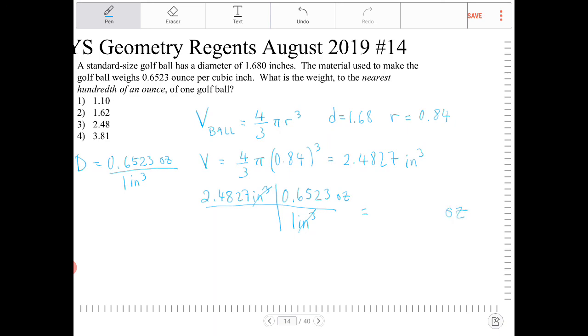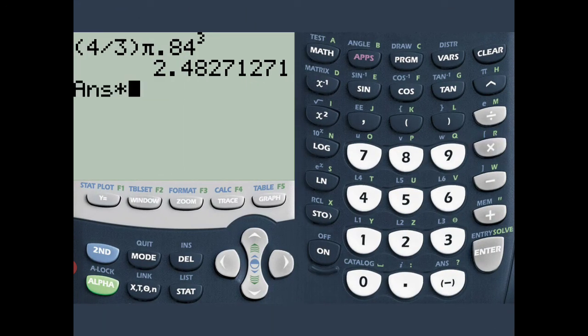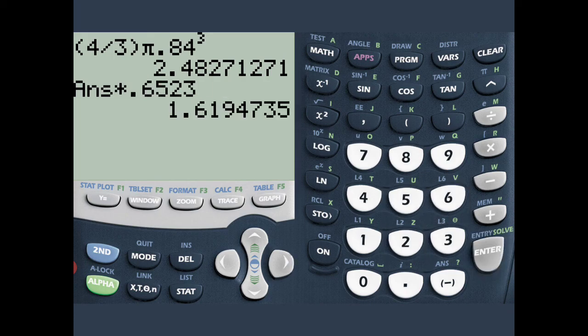So I want to take that number that I found a moment ago, and I'm going to multiply it by 0.6523. So multiply that by 0.6523. I get 1.619.